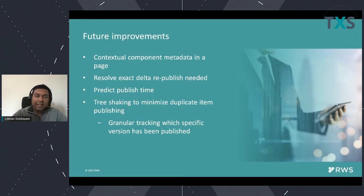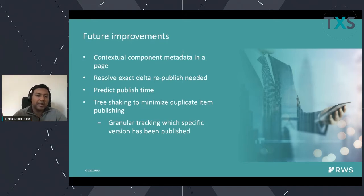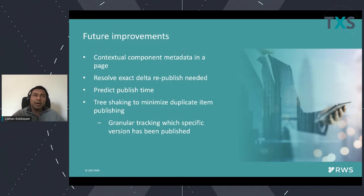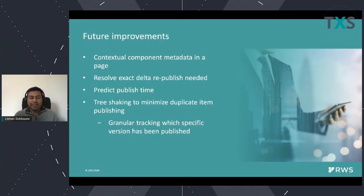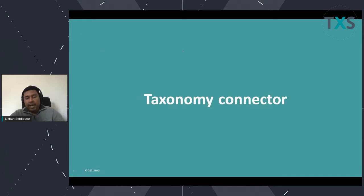This optimization is only possible because templates are no longer mutating data. If a component is published, we know exactly what was published. Historically, templates could change data — so if you published the same component using the same template n times, the output could have been different because, for example, the template might have put in a timestamp. Because we had templates, we were not able to predict this or say that the version of a component or template did not change, hence no republish needed. Now, because the data is immutable, we can guarantee that if a component's version did not change, it's always going to be the same output regardless of when or how many times you publish it.